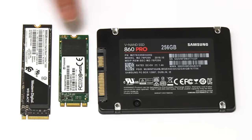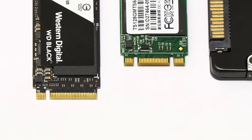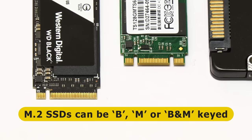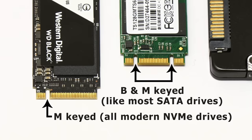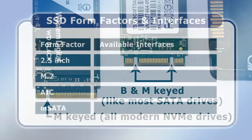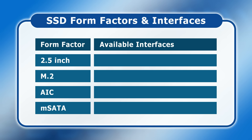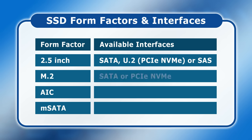NVMe and SATA M.2 drives look identical, and the different lengths of these drives has nothing to do with their different interface. All M.2 devices have slots or keys to prevent them being fitted into the wrong kind of M.2 slot. Specifically, M.2 SSDs can be either B keyed, M keyed, or both. Like all modern NVMe drives, this WD Black is M keyed, whilst like most SATA drives, this Transcend is both B and M keyed. To summarize, 2.5 inch SSDs can have a SATA, U.2 NVMe, or SAS interface; M.2 drives can be SATA or NVMe; PCIe add-in card SSDs are only ever PCIe NVMe; whilst mSATA SSDs are only ever SATA.